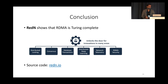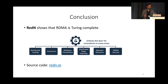To conclude, Redden has shown that RDMA is Turing complete, allowing us to perform arbitrary offloads on the NIC. In doing so, it unlocks the door for many potential use cases of offloads with RDMA, spanning things like distributed locking, consensus, and so on. There are a lot of interesting things that can likely be explored with Redden. If you want to check out the code, you can go to redden.io to access the source code and try it out for yourself. Thank you, and happy to take questions.